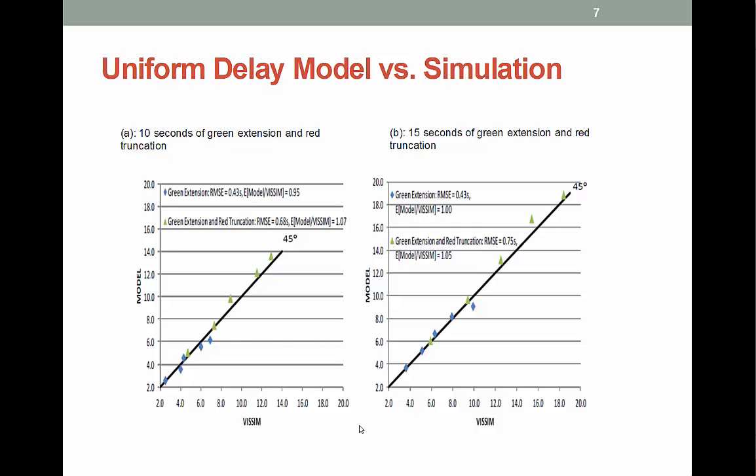This graphic shows how the actual simulation model results compare to the deterministic model results for an isolated intersection. There is a fairly good fit between the two methods for various congestion levels and scenarios. Therefore, the deterministic models could be used as a planning-level estimate instead of simulation models. As intersection gets more congested, the other parts of the HCM delay — highway capacity manual delay — become more pronounced, like the incremental delay. The deterministic model slightly overestimates benefits compared to simulation; however, the difference does not appear to cause any concern for a planning-level analysis.